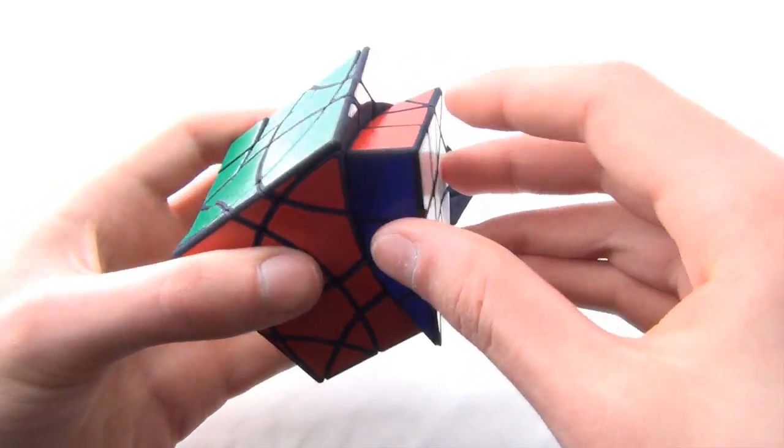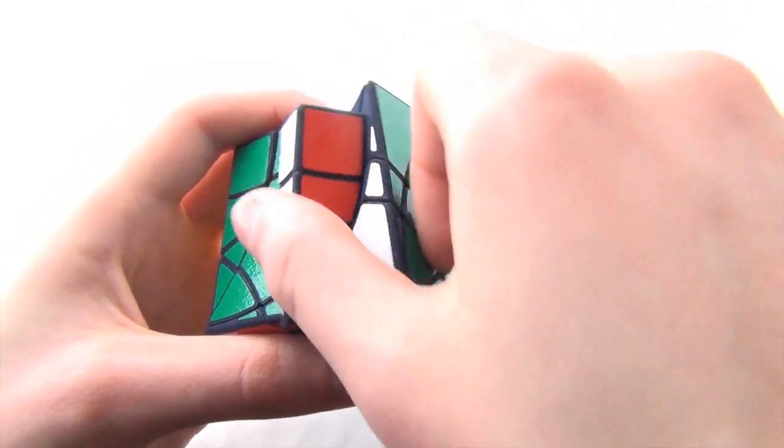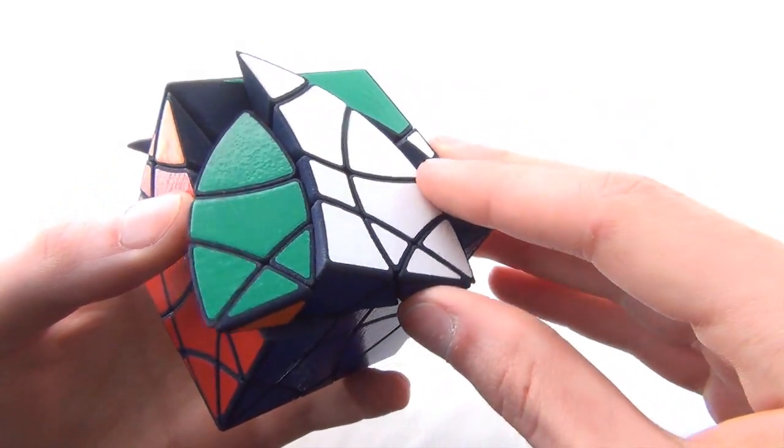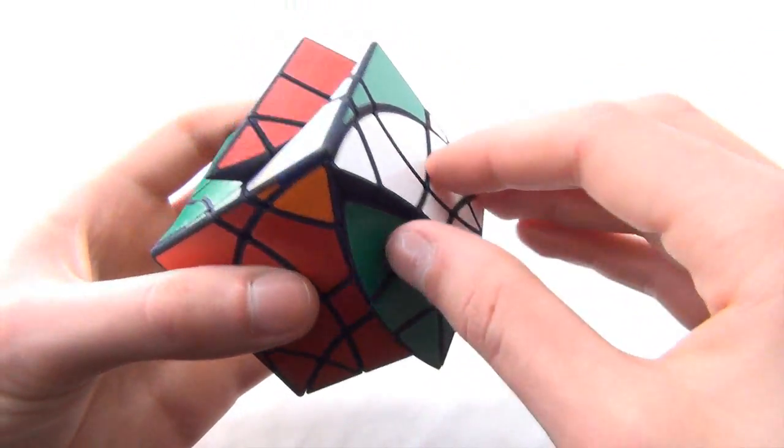We can also jumble between a face and edge layer, like this. And each one of these results in different sorts of shape-shifting.